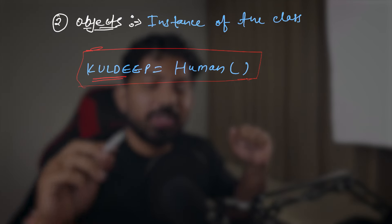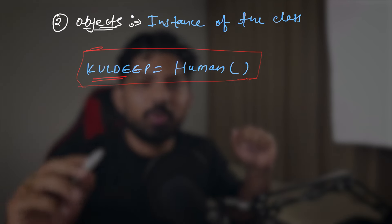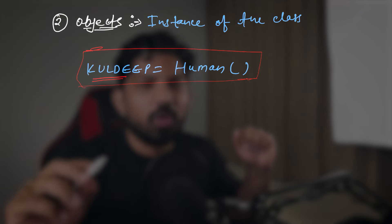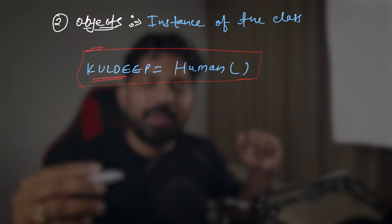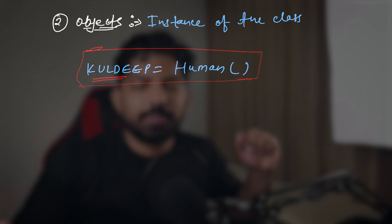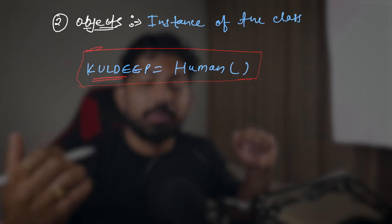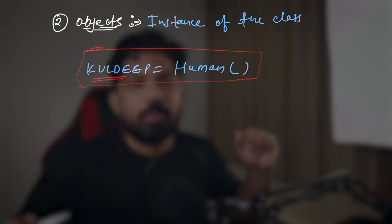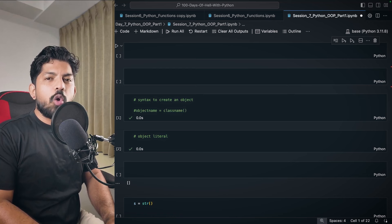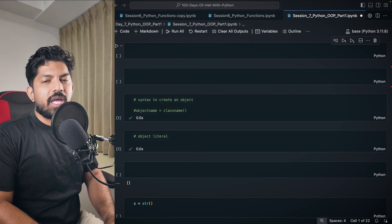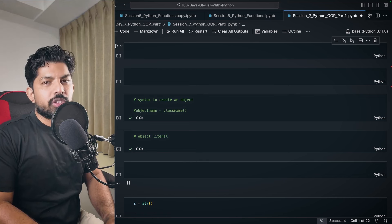Let me know in the comments whether this example was useful. Then we can move to the next concepts: encapsulation, inheritance, abstraction, and polymorphism. Now we will quickly take some examples to understand class and objects.